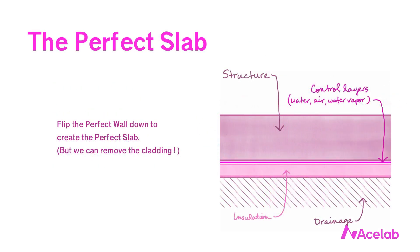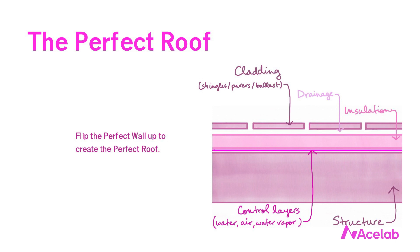If we flip the perfect wall down, we have the perfect slab. We can eliminate the cladding, but the other elements remain in the same order — the control layers are all outboard of the structure, and the thermal control layer is outboard of the rest. Similarly, we can flip the perfect wall up to create the perfect roof. Again, notice the consistent ordering: the control layers are outboard of the roof structure, and the thermal control layer is outboard of the other control layers.